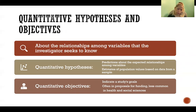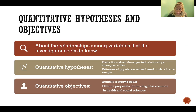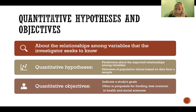Quantitative hypotheses and objectives are about the relationships among variables that the investigator seeks to know. Your hypotheses and objectives are predictions about what you think the relationships will be among variables, or what you think the outcomes will be. Quantitative hypotheses are predictions about the expected relationships, and you can also write hypotheses that estimate population values based on data from the sample.